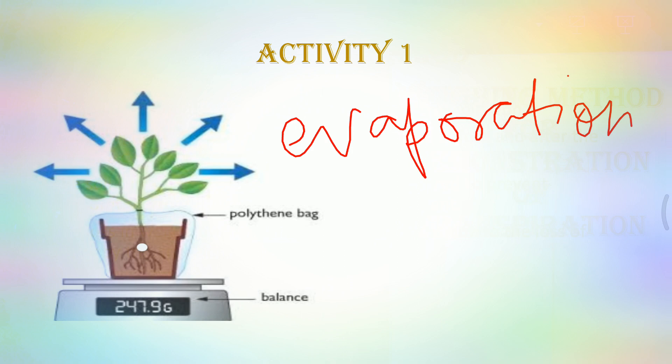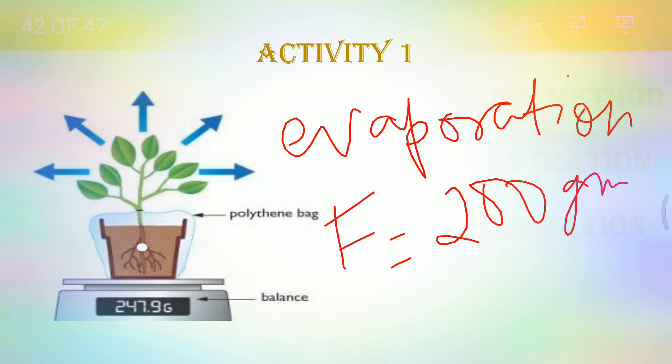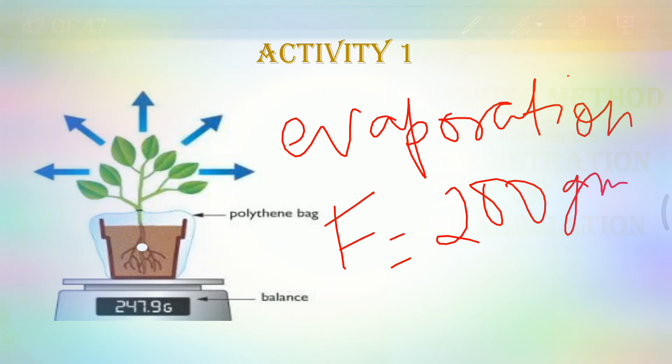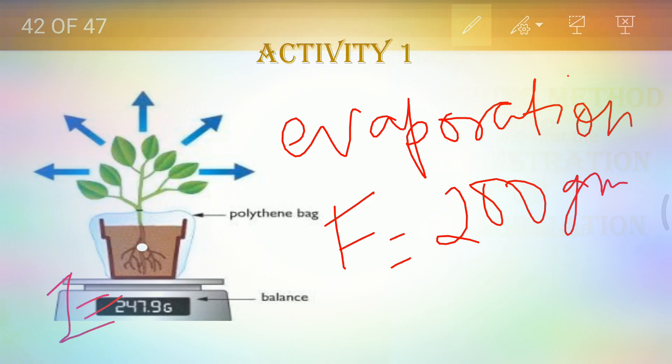Now after suppose 2 to 3 hours when we again weigh the same plant we find that the final reading which we can find out is 200 grams. Now there is a difference of 47.9 grams from the initial reading to the final reading. So the difference will be 46 grams.